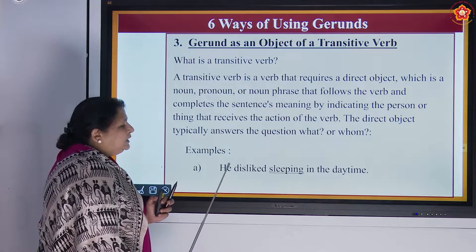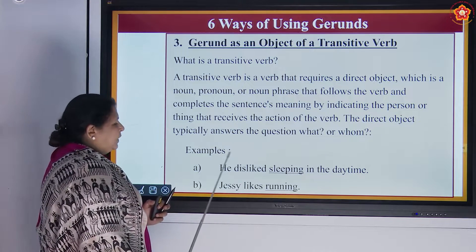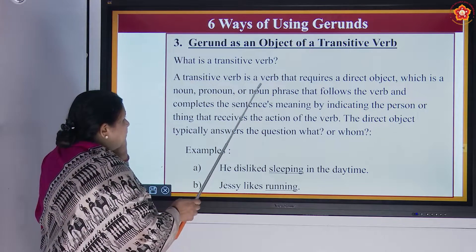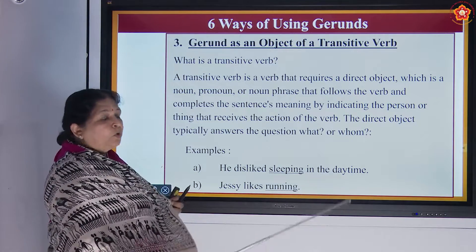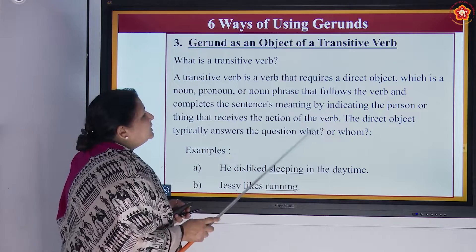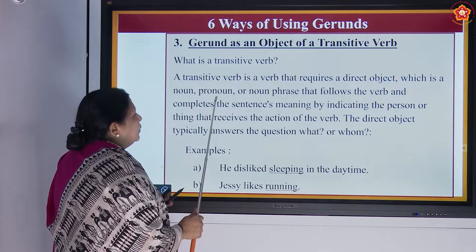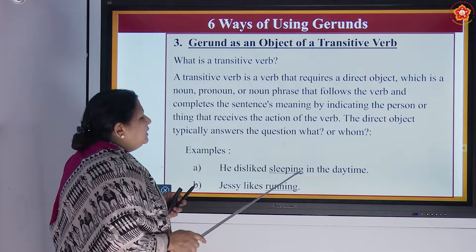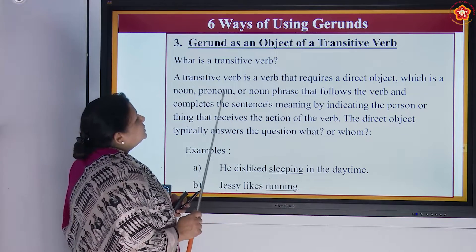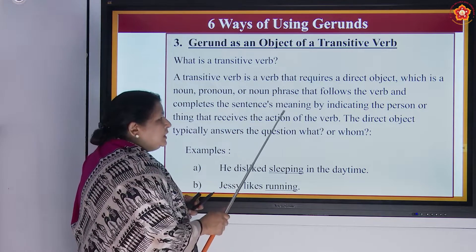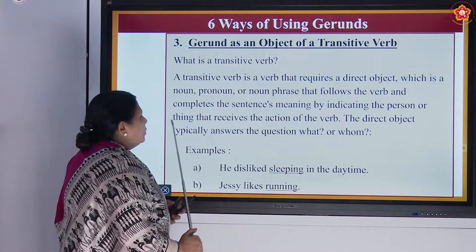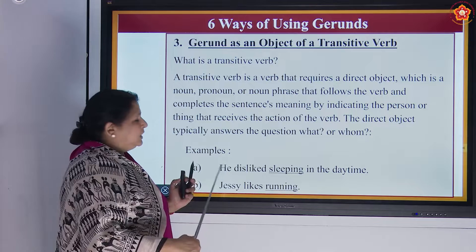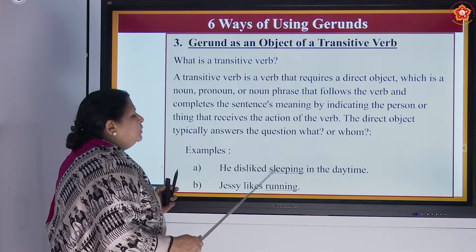Let us see the examples. 'He disliked sleeping in the daytime.' 'Jesse likes running.' Here, 'in the daytime' acts as the direct object — a noun phrase that follows the verb. The verbs are sleeping and running. The action is received by he/Jesse. So sleeping and running here function as gerunds acting as objects of a transitive verb.